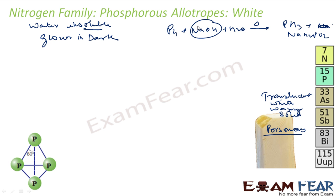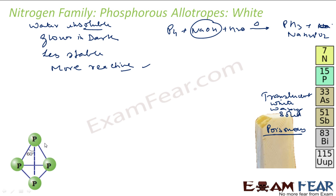White phosphorus is less stable and more reactive than the other forms — red and black. It is more reactive because of the angular strain in P4. The bond angle is only 60 degrees, and because of this angular strain, white phosphorus is more reactive and unstable.